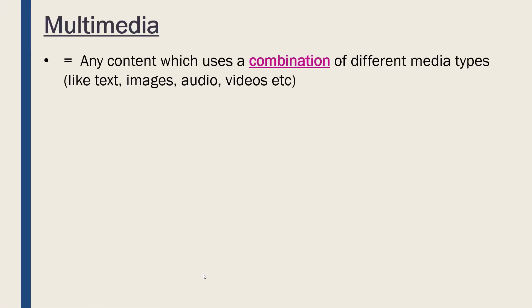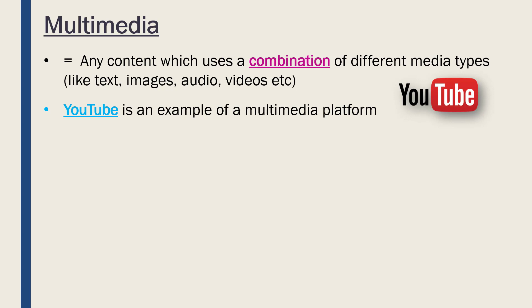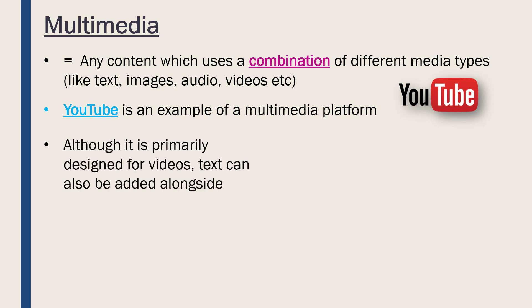Multimedia refers to any content which uses a combination of different media types — things like text, images, audio, and videos — all slightly different ways of communicating information. Multimedia uses a combination of these, and YouTube is a good example of a multimedia platform.